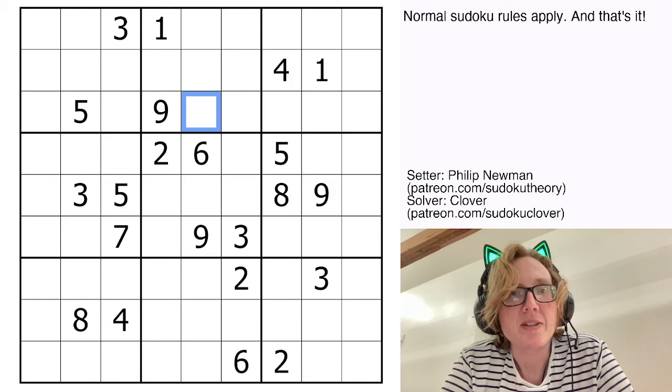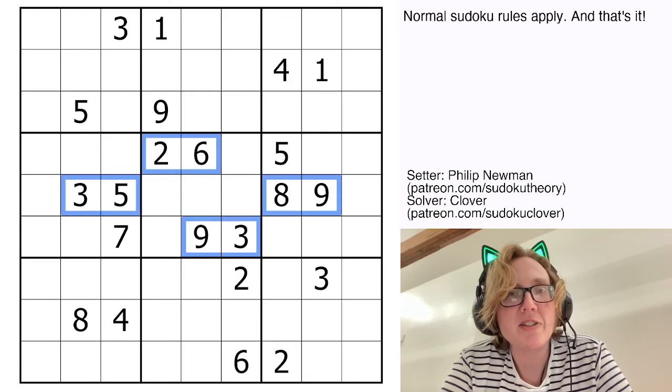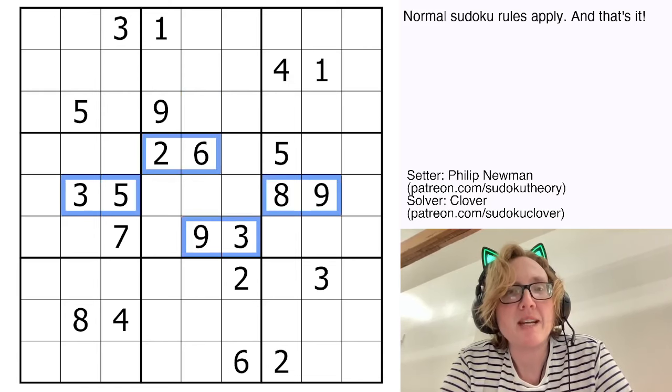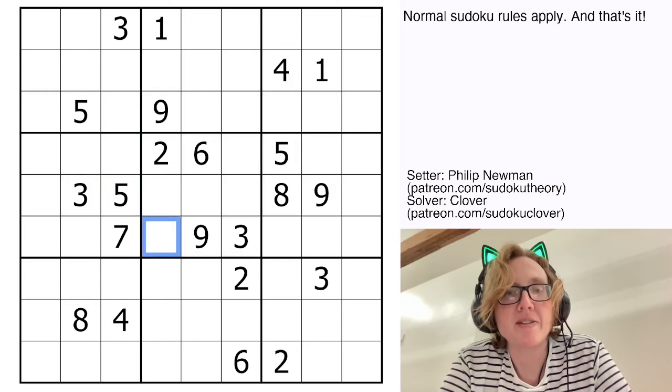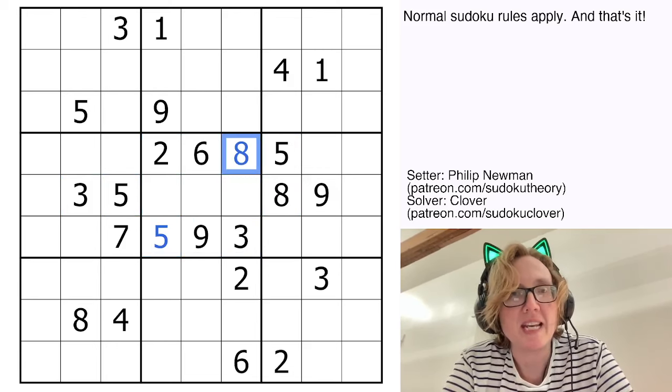So where are we going to start here? So we've got this middle region, and then these digits look kind of promising. I haven't used a 5 or an 8 yet in the middle region, I'm noticing. So I've got 5s here, so the 5 in the middle has to go there. And then this 8 here sees these three cells, so that will be an 8.